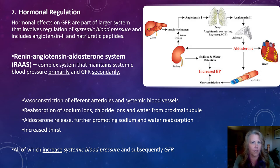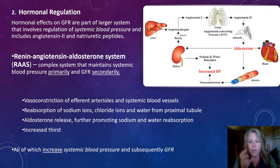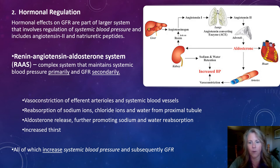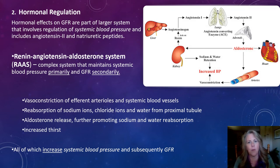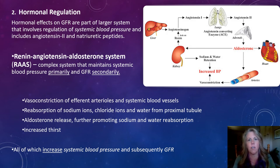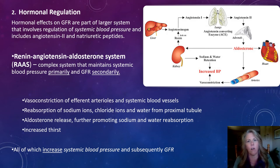Another effect of the RAAS is increasing thirst — our drive to drink. If we're thirsty, we drink more water, increasing blood volume, and therefore blood pressure, at least in the short term. Collectively, all of these mechanisms increase systemic blood pressure, which in turn increases the glomerular filtration rate. This hormone pathway works in different ways, ultimately to increase systemic blood pressure and therefore increase our GFR.